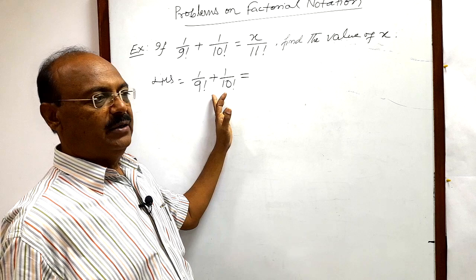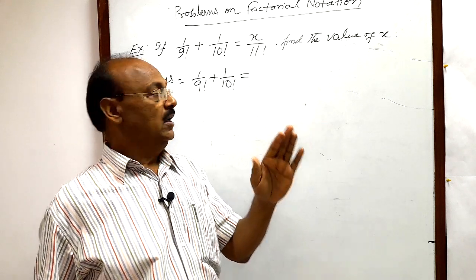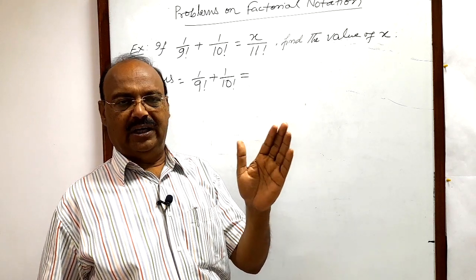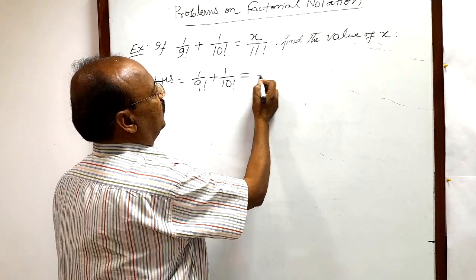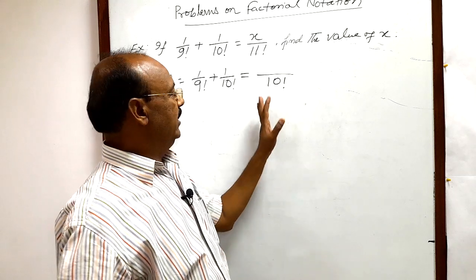So 9 factorial means the product of first 9 natural numbers 1 into 2 into 3 up to 9. Similarly, 10 factorial is 1 into 2 into 3 up to 10. So naturally you can understand LCM will be 10 factorial. I hope you have understood it.